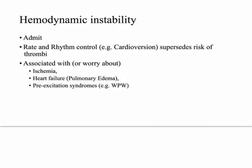If somebody has hemodynamic instability, admit them to the hospital. Rate and rhythm control both supersede the risk of thrombi — you're not going to worry about anticoagulation if it interferes with controlling rate and rhythm. Cardioversion is strongly implicated when there's hemodynamic instability. It's not a matter of weighing pros and cons; it's about staying alive versus potentially dying or suffering severe damage to organ systems.